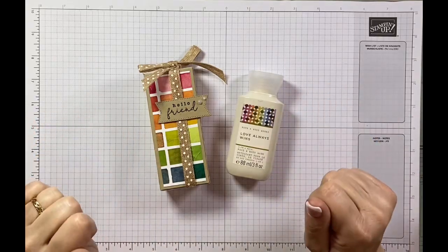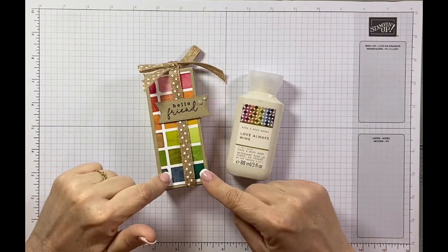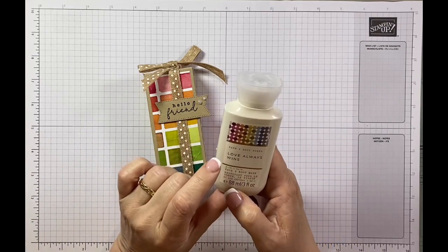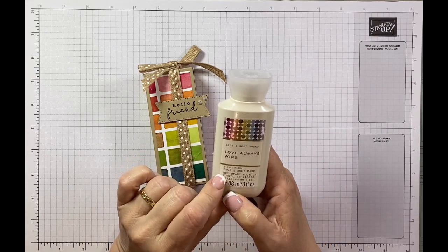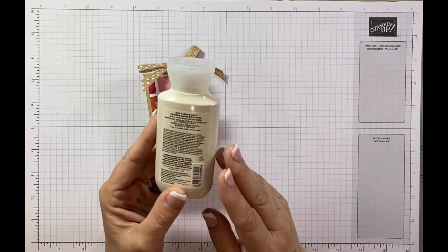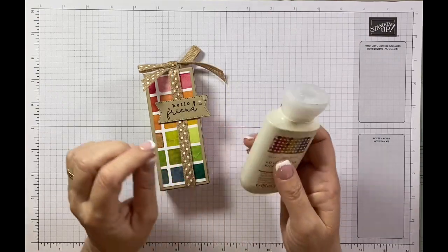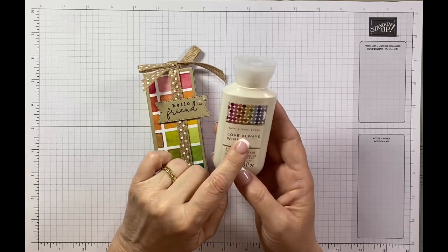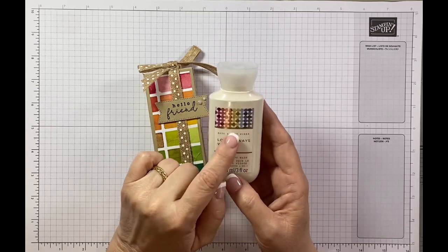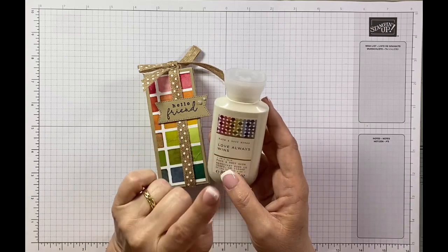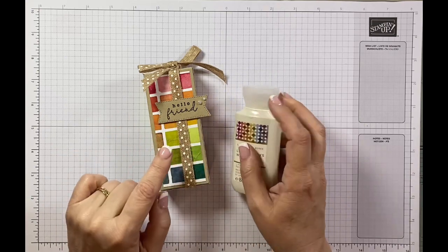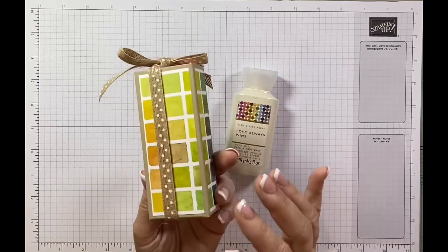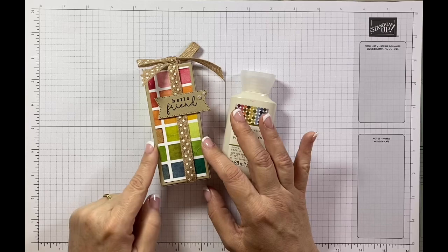Hi, it's Jane here from craftwithjane.co.uk and today I'm bringing you this really cute little gift box that I've made purposefully for this Bath & Body Works mini shower wash. It's just so cute and I saw it in the shop, in Next in the UK where you can get Bath & Body Works. I just love this pattern and thought oh my gosh this really reminds me of this amazing new paper that we've got.